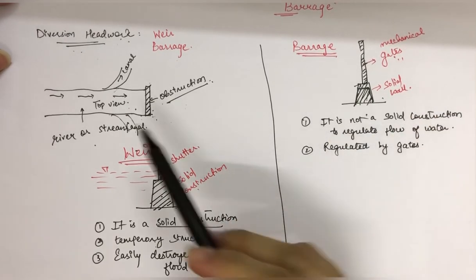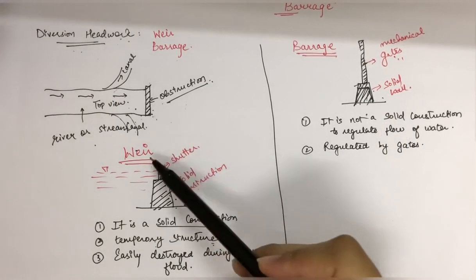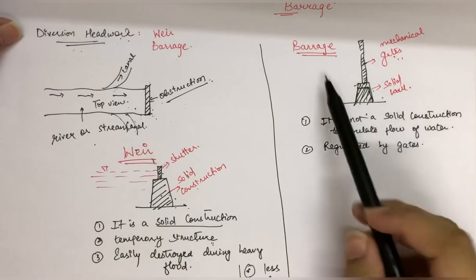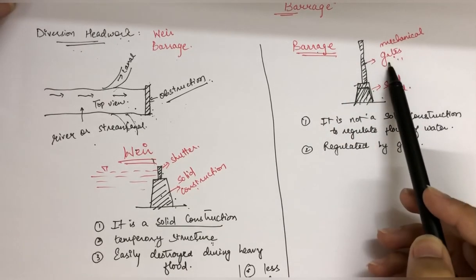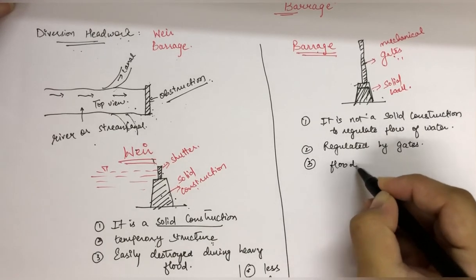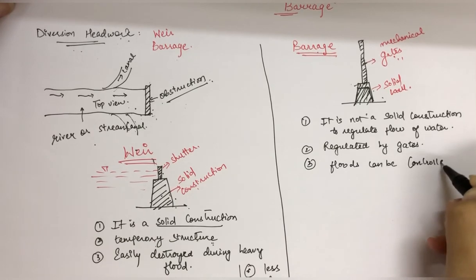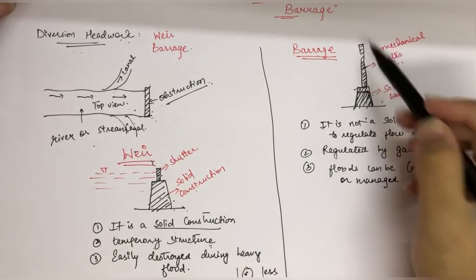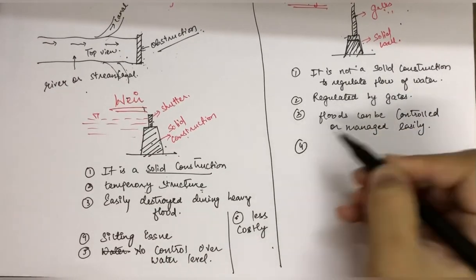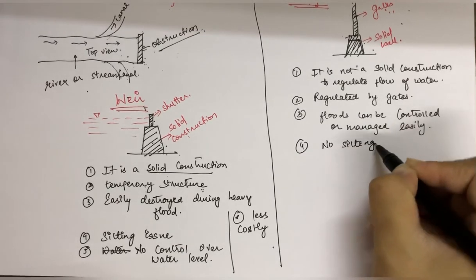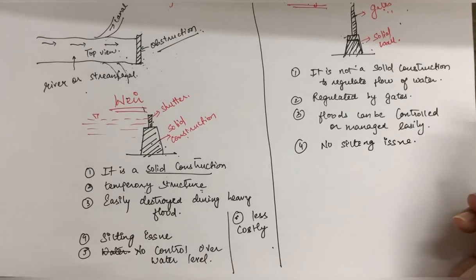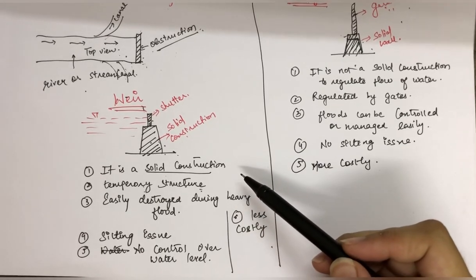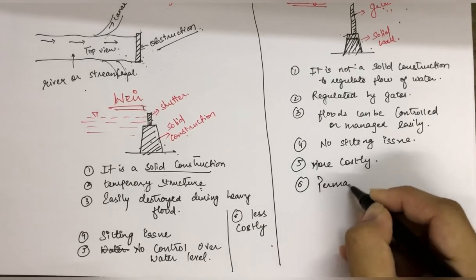The purpose of both is the same — to raise the water level and divert it. But in case of floods, wear could get damaged and there is no control over flood level. In case of a barrage, floods can be controlled or managed easily because of the mechanical gates. Due to these gates, there is no silting issue either. And yes, barrage is more costly as compared to wear, and it is a permanent structure.